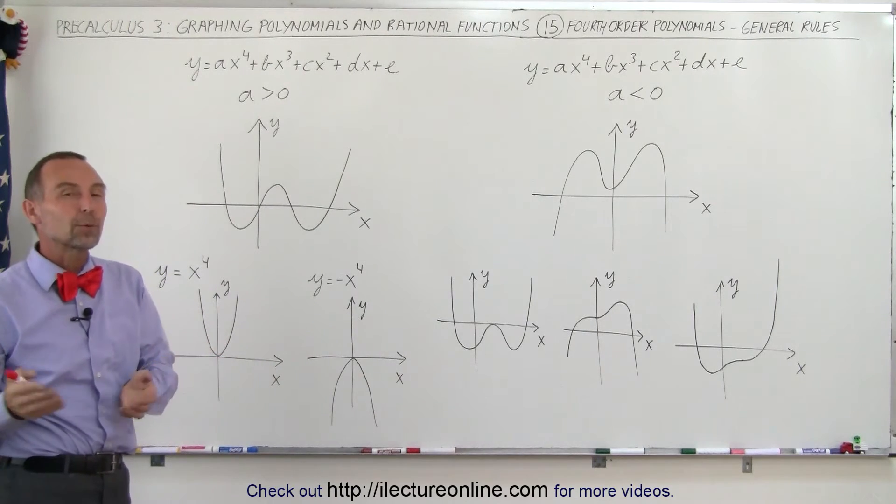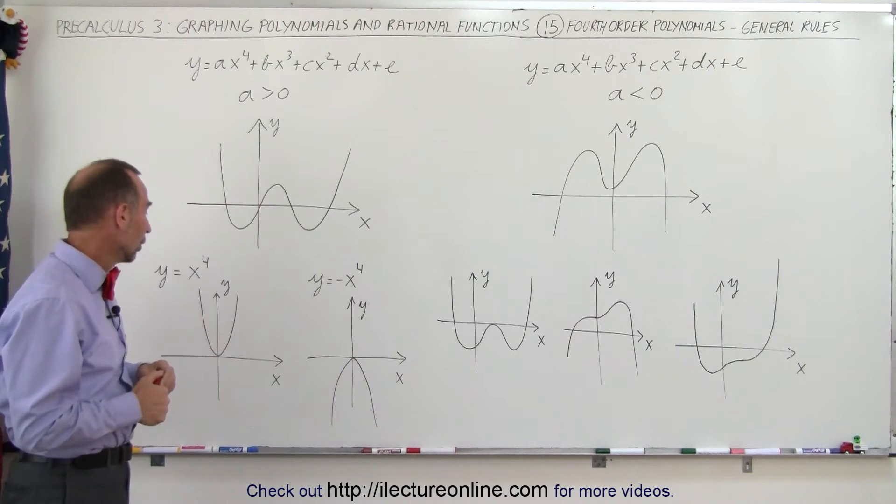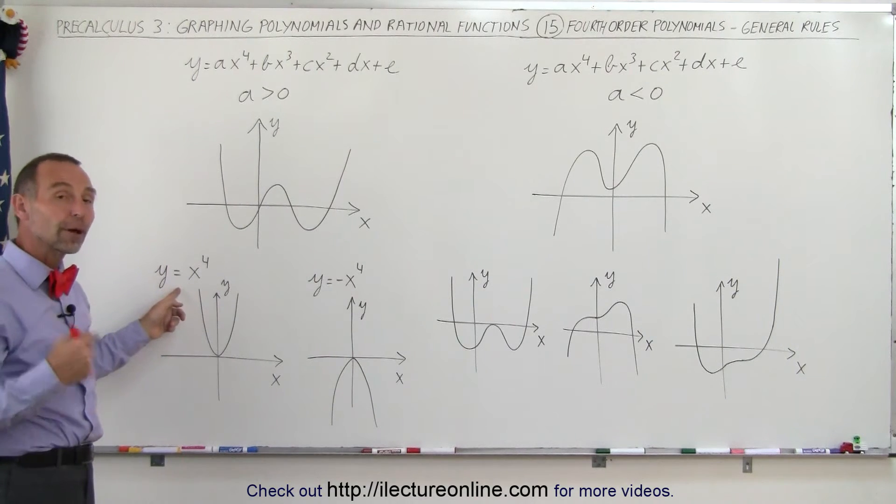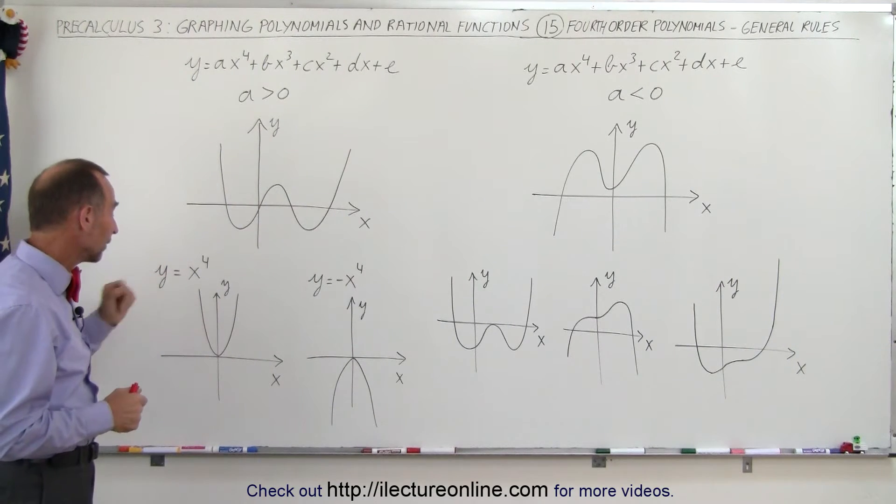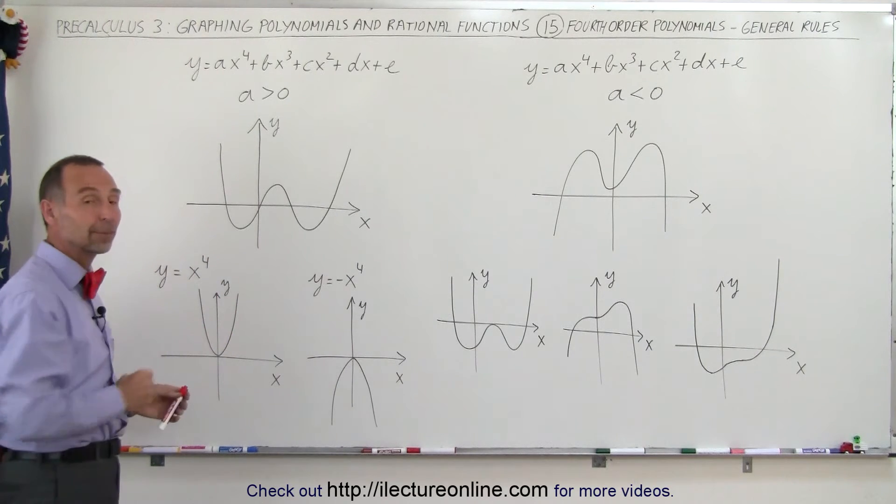But those are not the only ways in which the graph could exhibit itself for a fourth-order polynomial. Notice that this is also a fourth-order polynomial, and in this particular case, the graph looks just like a parabola.